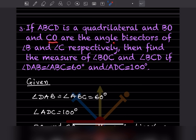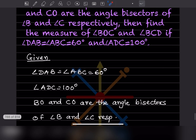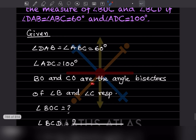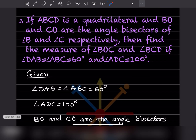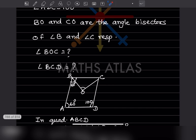Next problem: ABCD is a quadrilateral where BO and CO are the angle bisectors of angle B and angle C respectively. Find the measure of angle BOC and angle BCD, given that angle DAB = 60 degrees and angle ADC = 100 degrees. BO and CO are the angle bisectors of angle B and angle C.